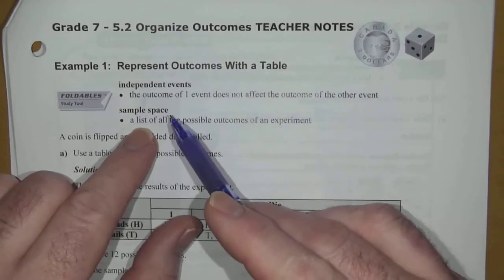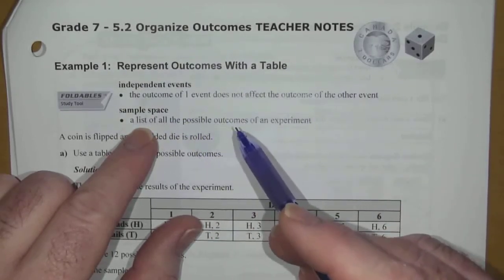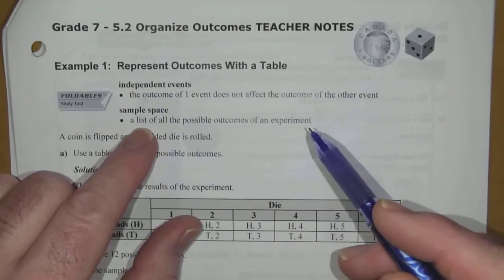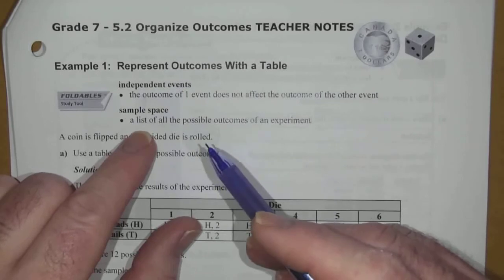Another definition here is sample space. It's a list of all possible outcomes of an experiment. And we'll get to that in a moment here. I'll show you what that looks like.